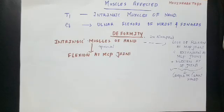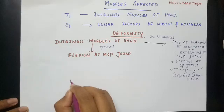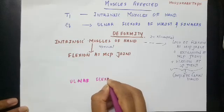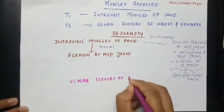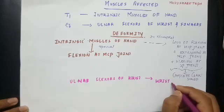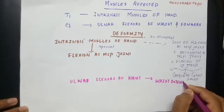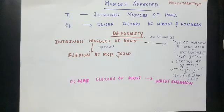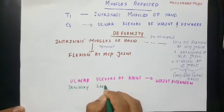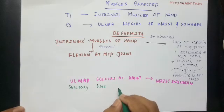Because of the paralysis of ulnar flexors of the wrist, there will be wrist extension also. So these are the two deformities in Klumpke's paralysis. Along with this, there will be sensory loss over a small area on the medial aspect of the forearm and hand.